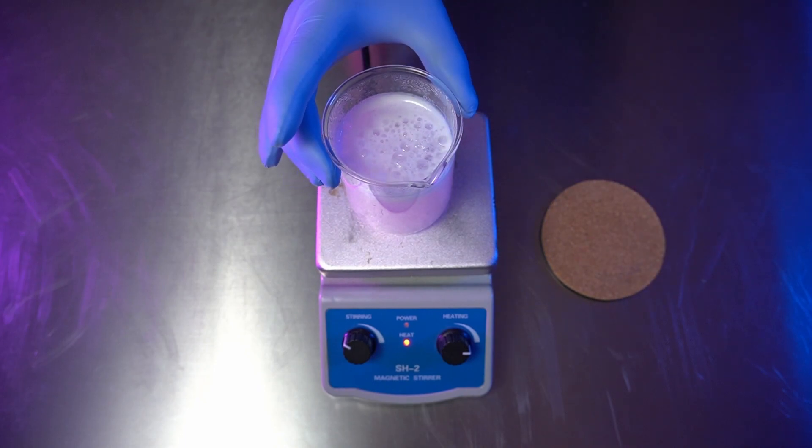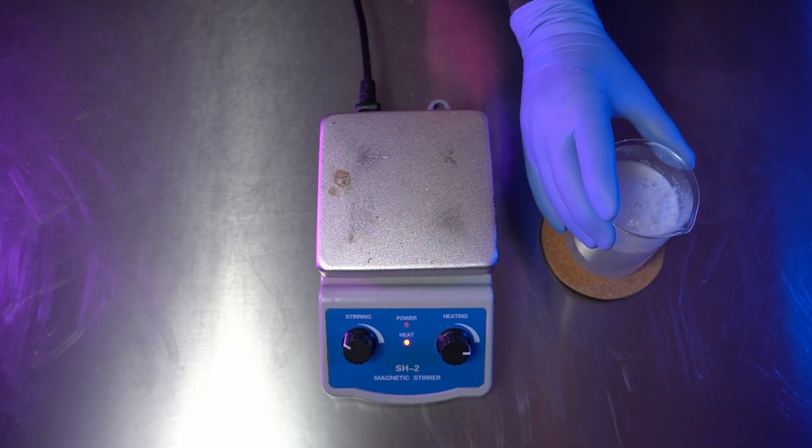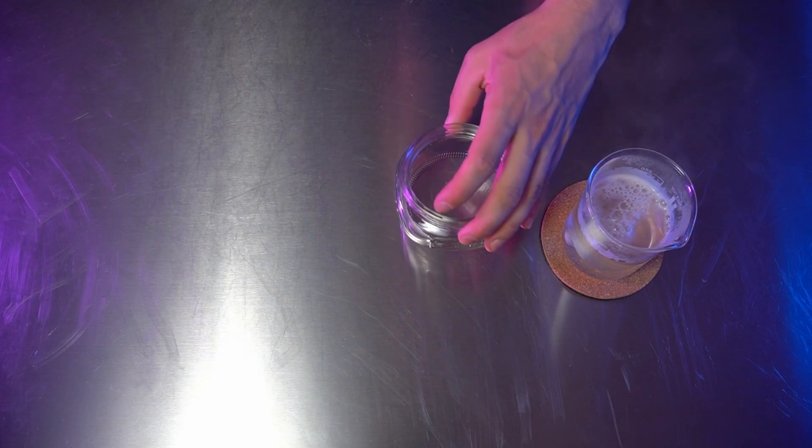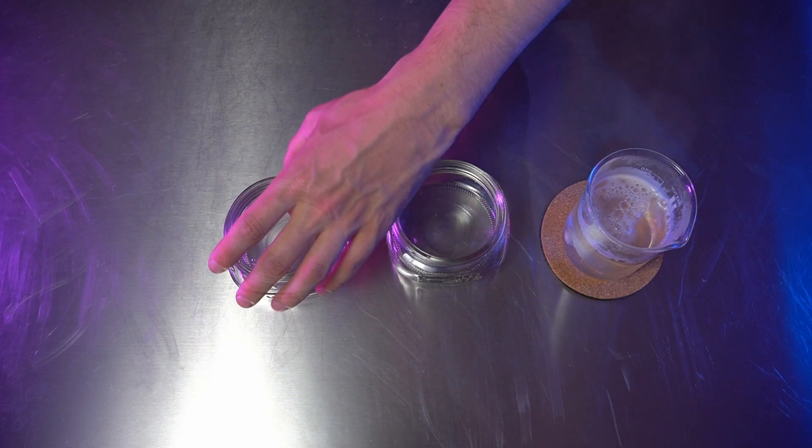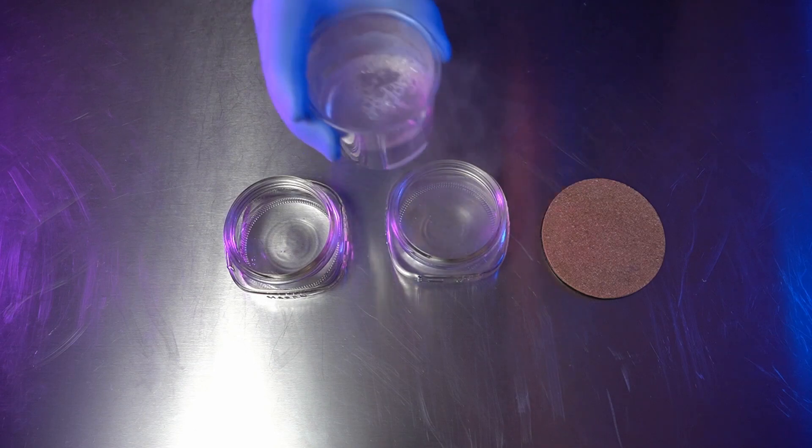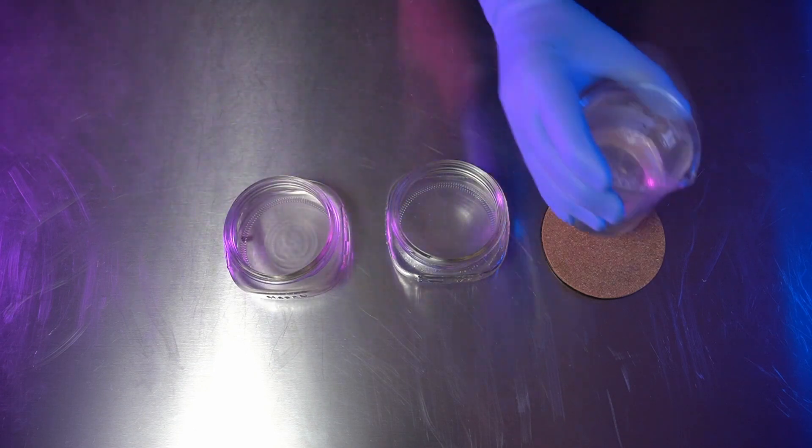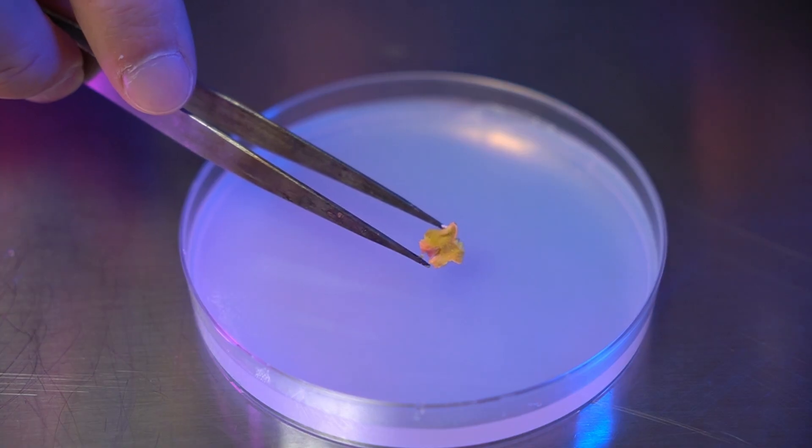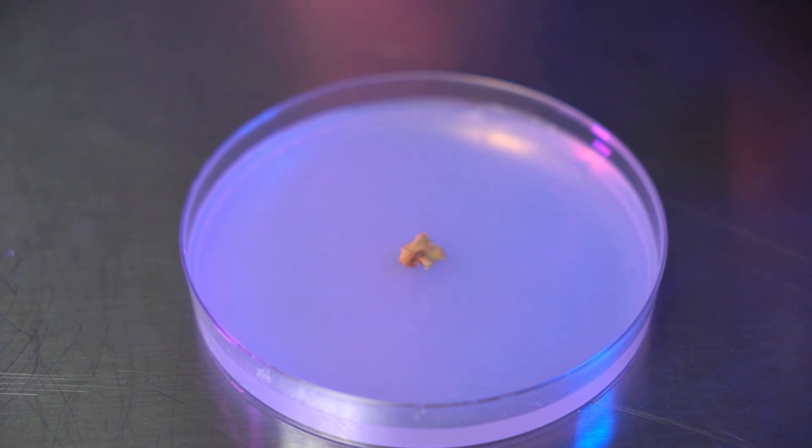To activate the gelling effect, you need to bring the agar to a boil. After that, we can pour it into our containers. Follow the same steps we outlined for inoculating filter paper to inoculate your agar containers.